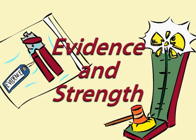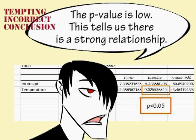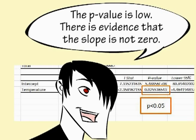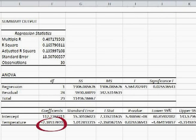Evidence and strength. This is pretty much the same idea but related to regression and correlation. It is tempting when the p-value associated with the slope is low to state that there is a strong relationship between the variables. However, this is not correct. A low p-value for regression tells us that there is evidence that the slope is not zero. A low p-value does not tell us that there is a strong relationship between the two variables. To examine the strength of the relationship, we look at the slope, the correlation coefficient, and the r-squared value.